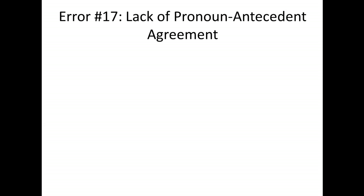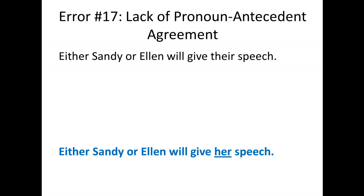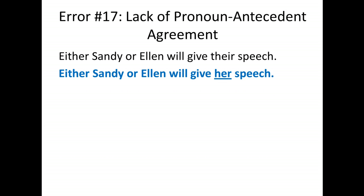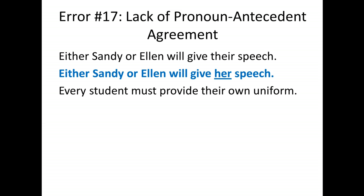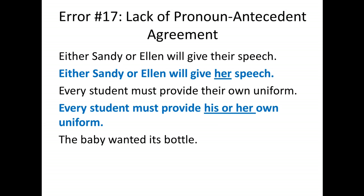Error number seventeen is lack of pronoun antecedent agreement — that means the noun and the pronoun don't match. 'Either Sandy or Ellen will give their speech' should be 'Either Sandy or Ellen will give her speech.' Either works the same way as neither. 'Every student must provide their own uniform' should be 'Every student must provide his or her own uniform.' 'The baby wanted its bottle' — a baby is a human being and should be referred to as 'his or her,' so: 'The baby wanted his bottle.'